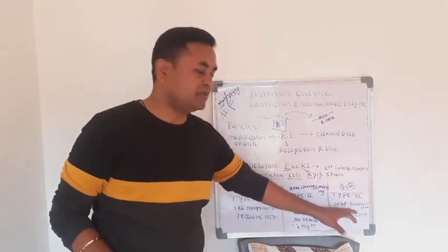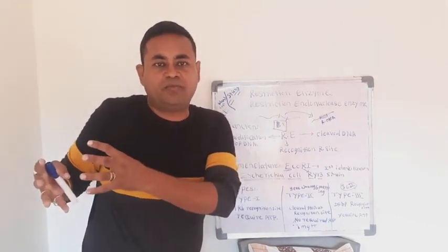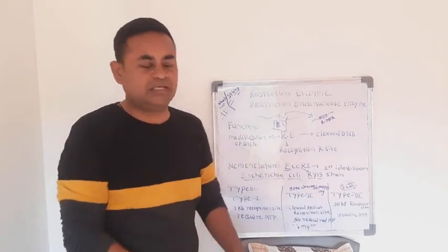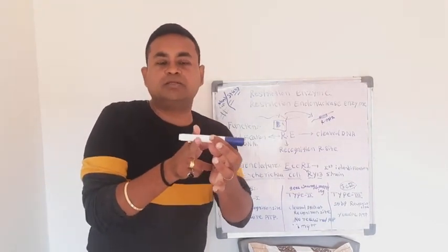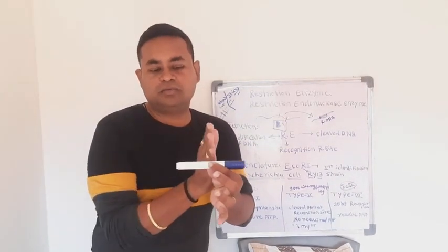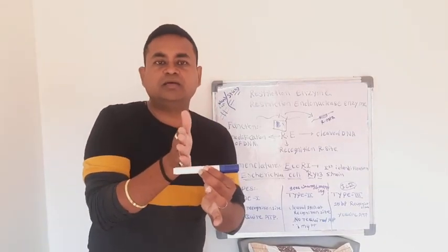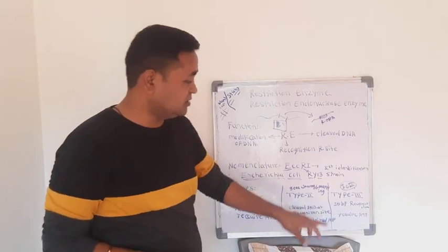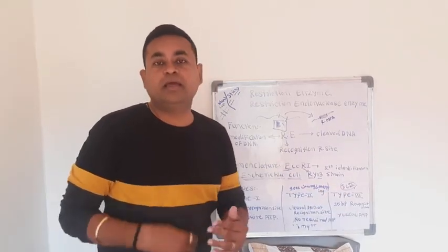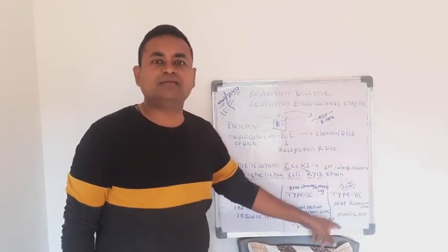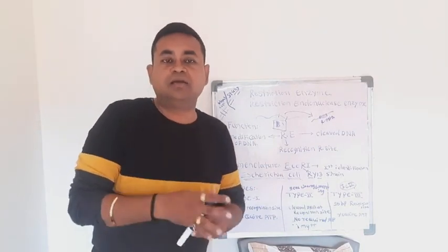Type III restriction enzymes are in between Type I and Type II in their characteristics. They recognize a specific restriction site and cut approximately 25 base pairs above or below it. They require ATP molecules. This summarizes the three important types based on their recognition of restriction site and cutting of DNA.